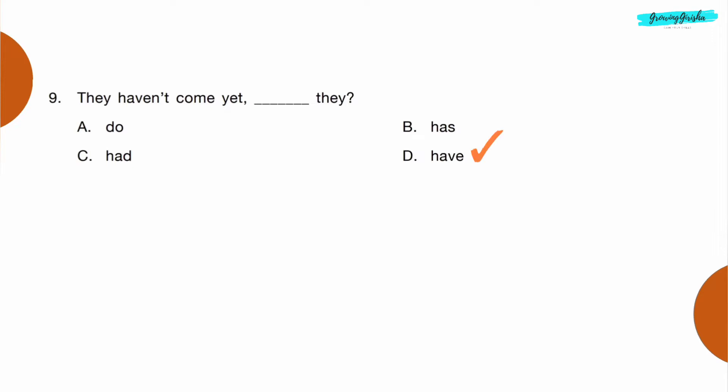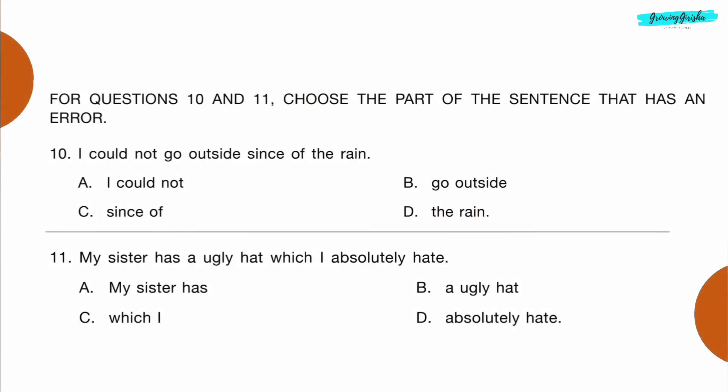Question 9: They haven't come yet, dash they? Option D: have. For questions 10 and 11, choose the part of the sentence that has an error. Question 10: I could not go outside since of the rain.